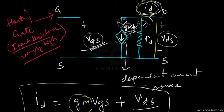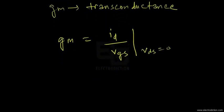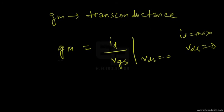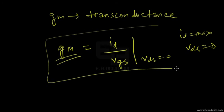When the output terminals are shorted, ID is maximum. This is basically what happens inside an amplifier when using the FET in small signal applications. Transconductance refers to the variation of the drain current with respect to variations in the input AC signal at the gate terminals.